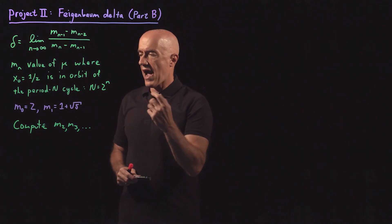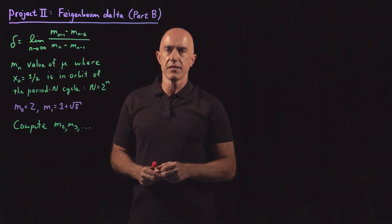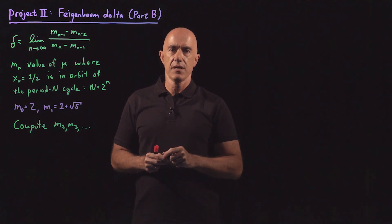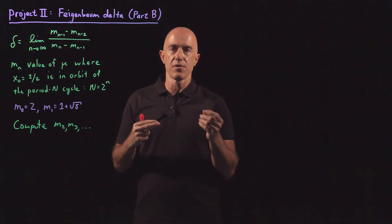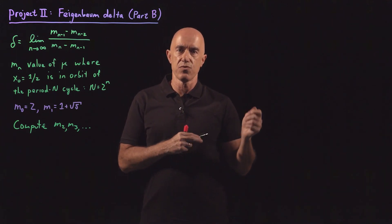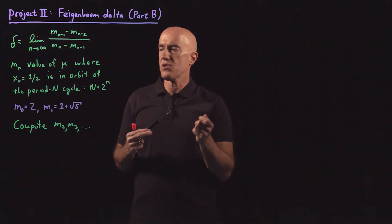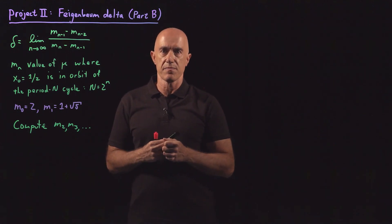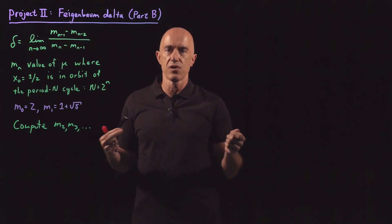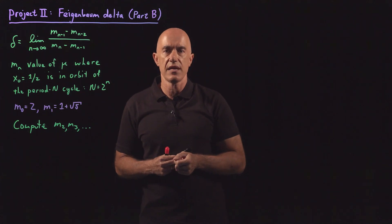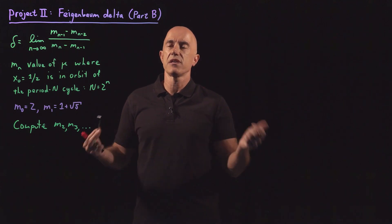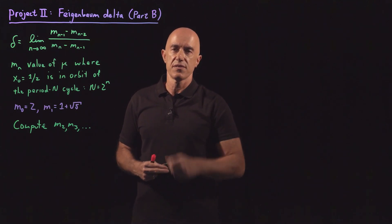So how are we going to compute the Feigenbaum delta? We're going to have to convert this problem to a root finding problem. A lot of problems that you handle computationally do tend to get converted to a problem in root finding. And because we're going to have to be iterating the logistic map a lot of times — 2 to the n times, and 2 to the n grows very fast; 2 to the 10 is already 1,024 — we want a fast method of root finding. So we're going to use Newton's method.